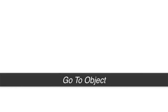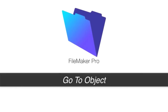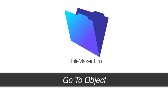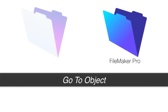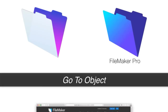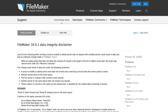In this video I want to talk about the Go to Object script step that's part of the FileMaker platform. This script step behaves a little bit differently between the FileMaker 15 and 16 releases — so much so that FileMaker has issued a warning to alert people to the behavior change.